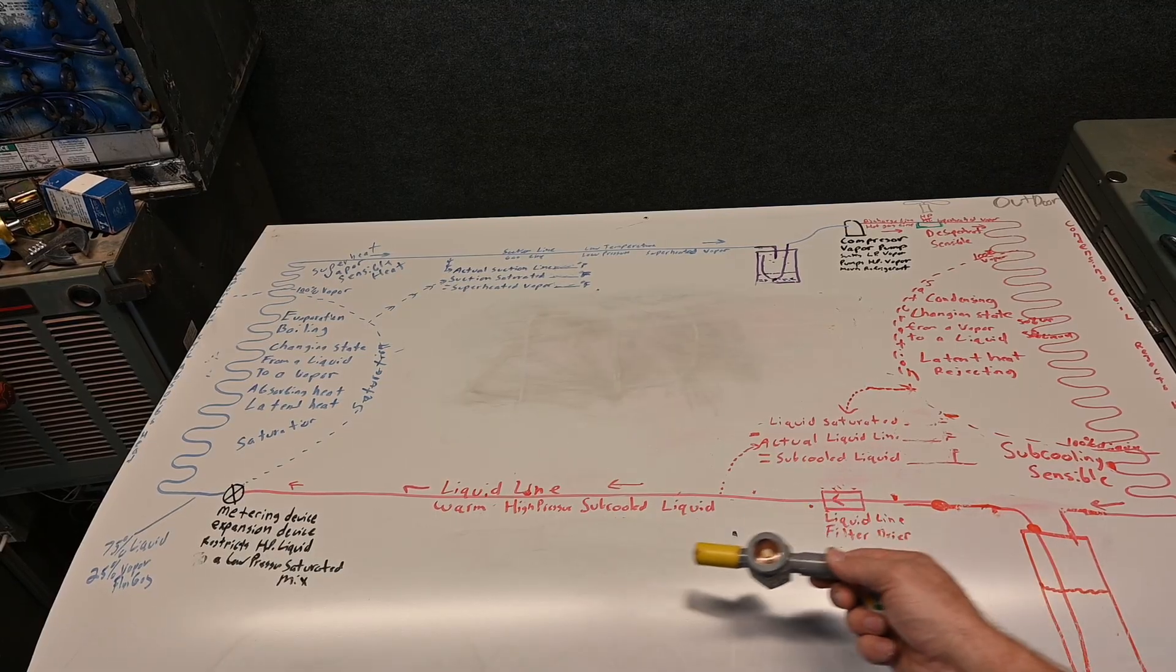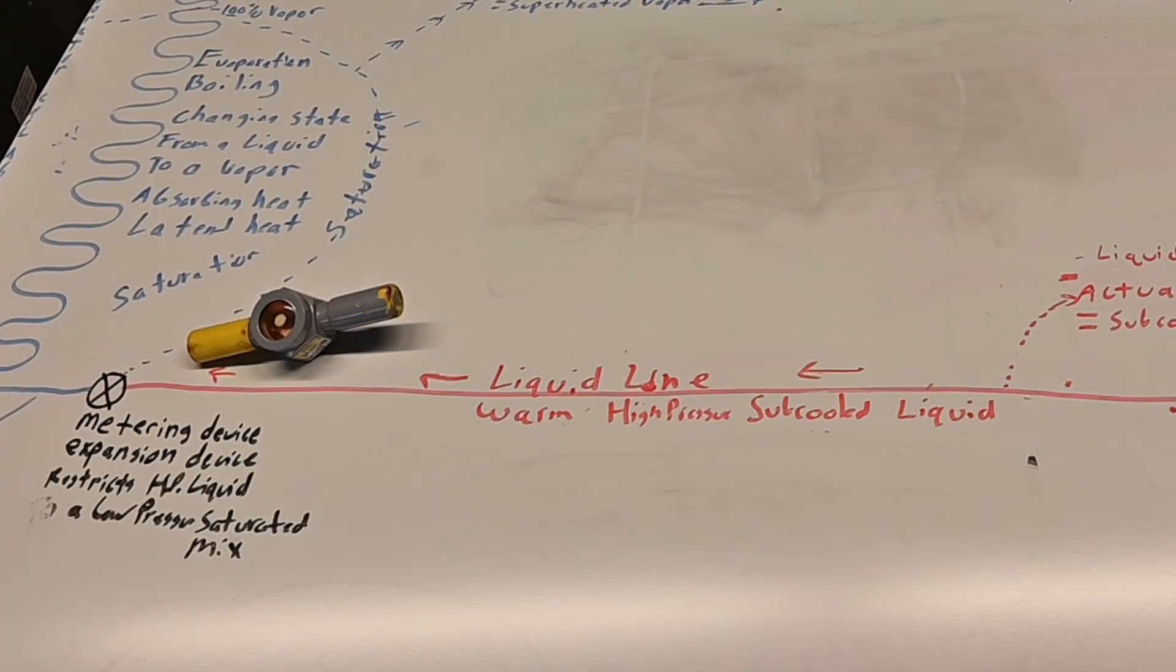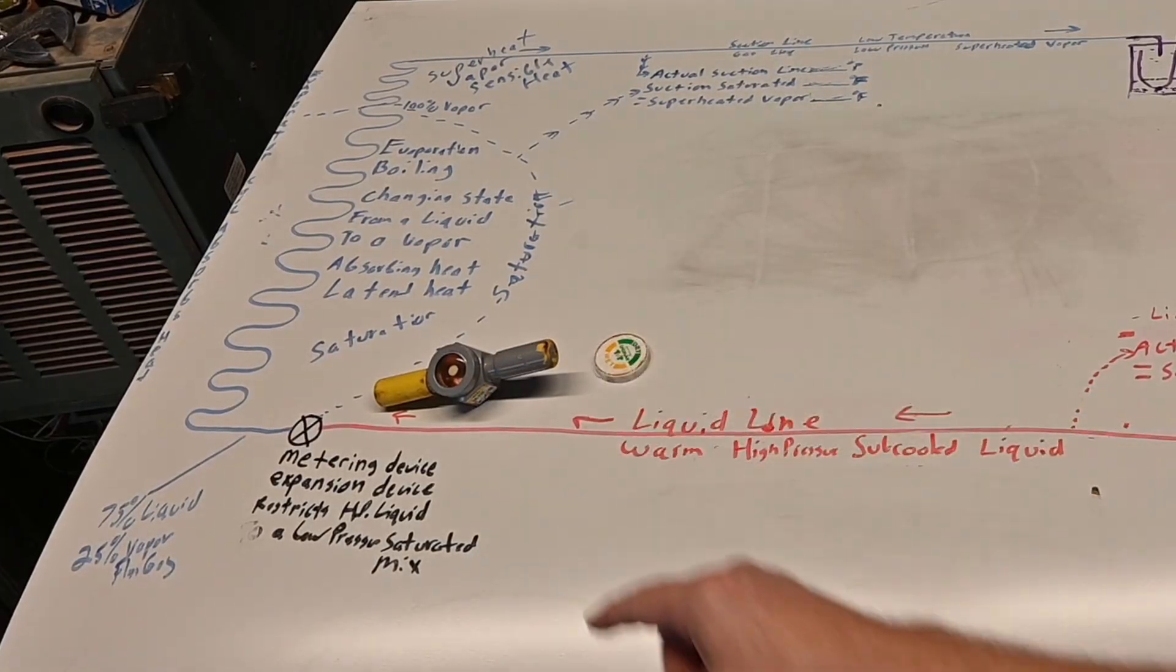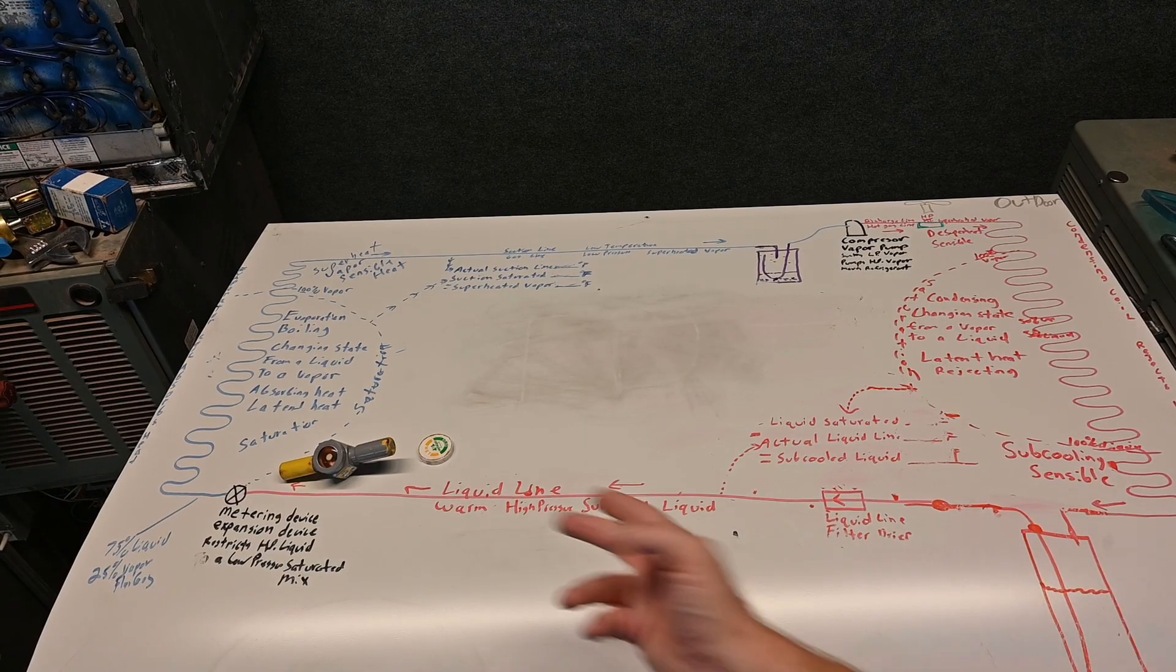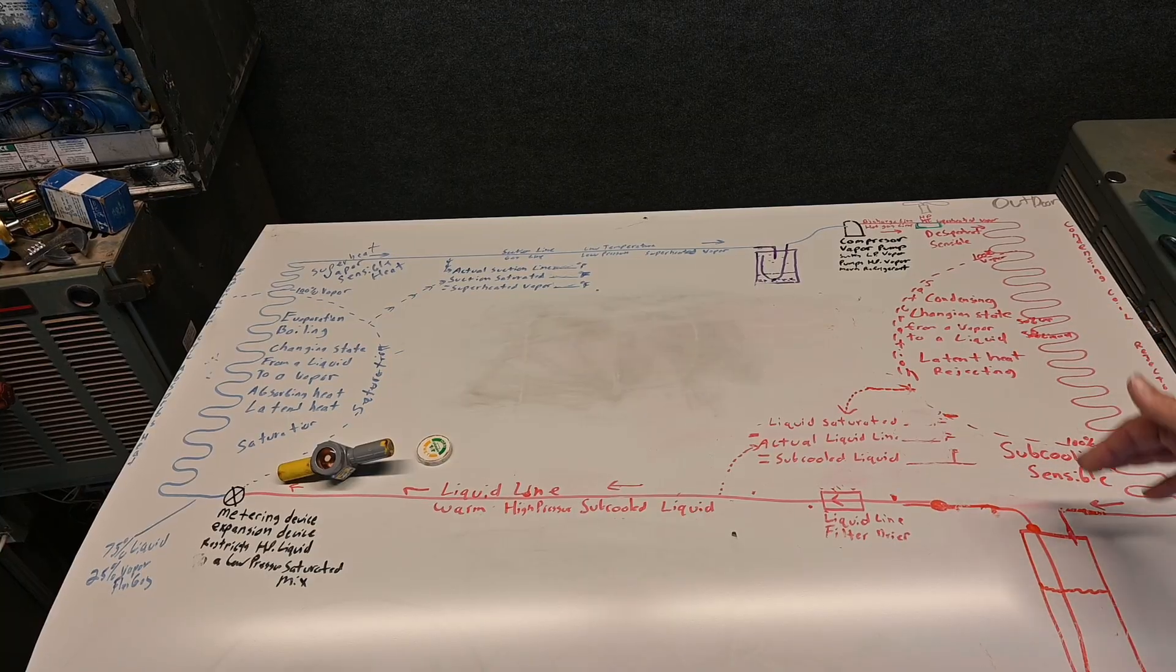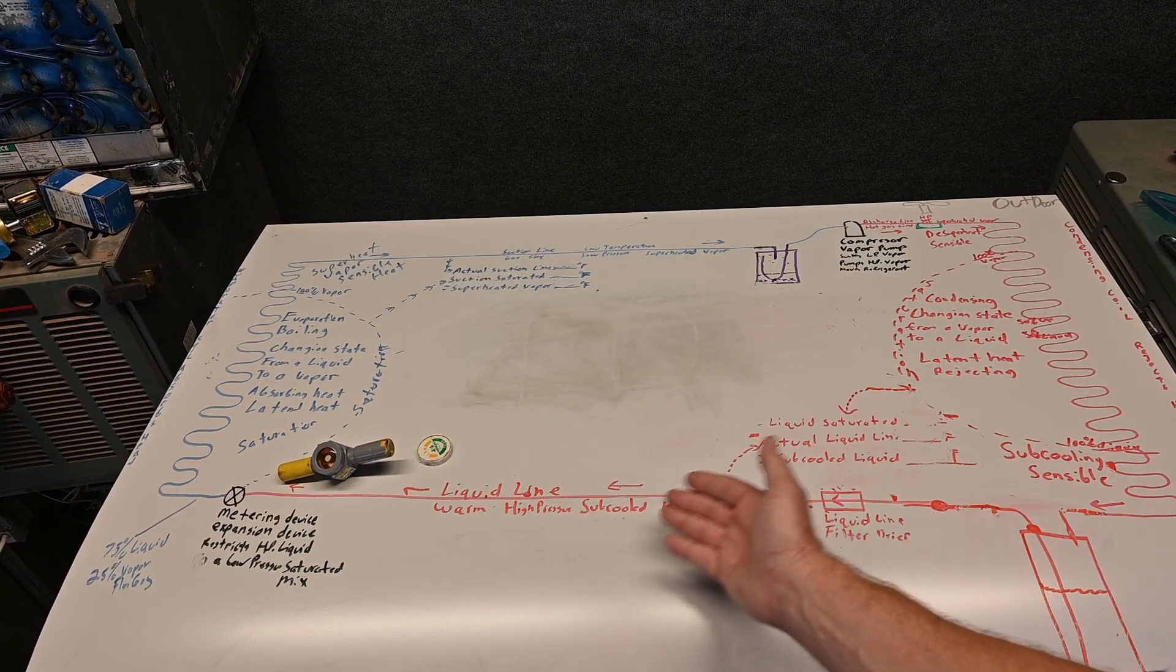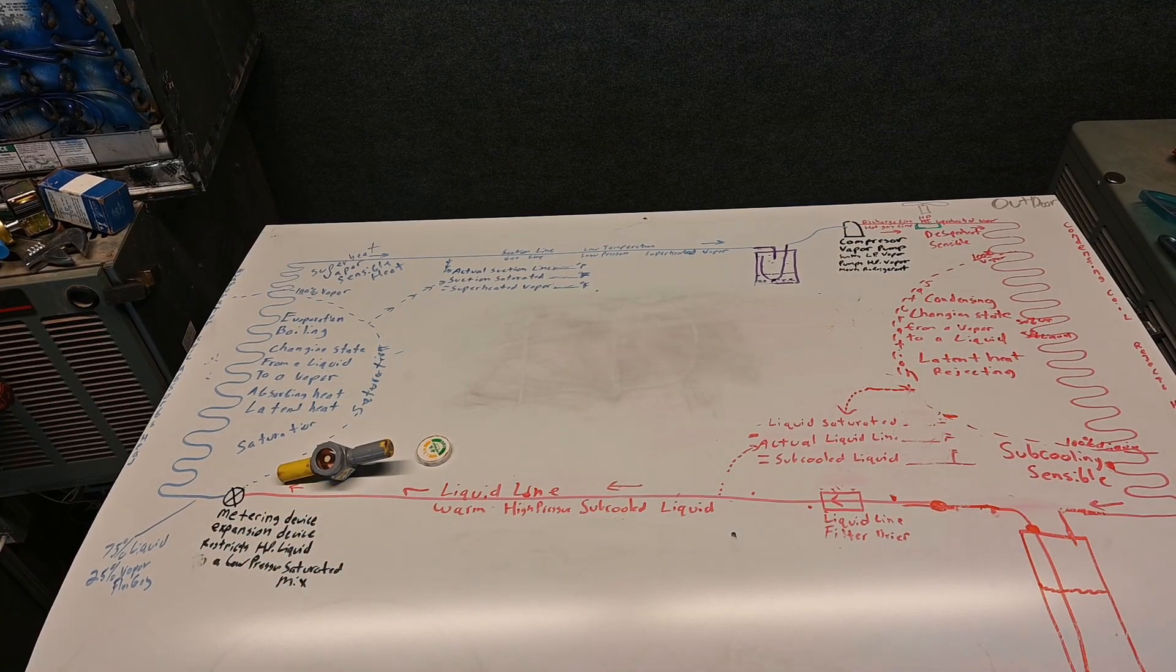Now if I do install these in residential, I like to put it right before my metering device. The reason I like it there is because I can tell not only if I have moisture, but also that I have enough subcooled liquid coming over here to my metering device. Remember, the metering device meters liquid refrigerant. So even if I have enough subcooling over here, maybe I have a restriction somewhere, maybe the attic's too hot and I'm losing my subcooling, and I can see if I have liquid refrigerant before I get to my metering device.